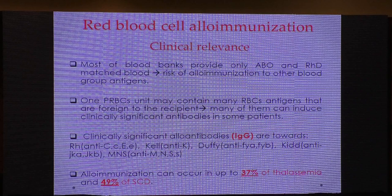Alloimmunization can occur in up to 37% of thalassemic patients and 49% of sickle cell disease patients. About 50% of these patients develop alloimmunization from recurrent transfusions.